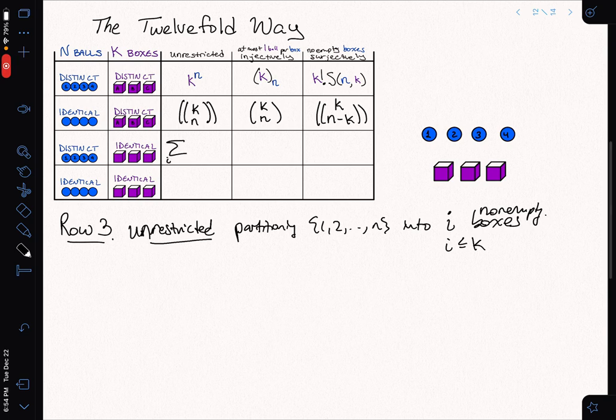I get the sum from i equals 1 to k. That's how many boxes are going to get something. And what am I doing? I'm doing a set partitioning. Those are counted by the Sterling numbers of the second kind. That's an i because i is how many boxes that I have. That's in the unrestricted case.